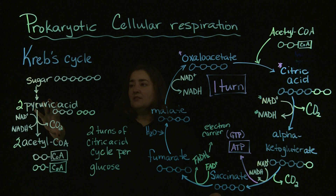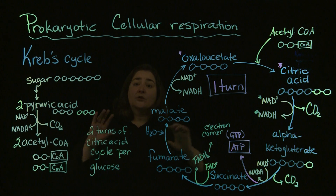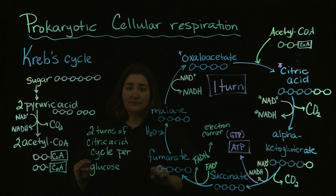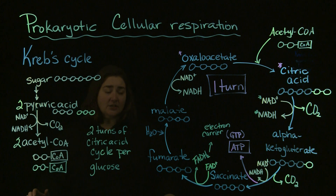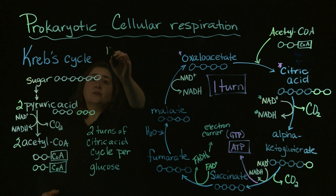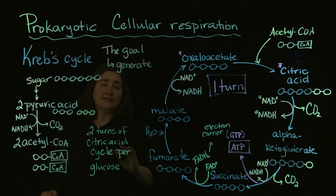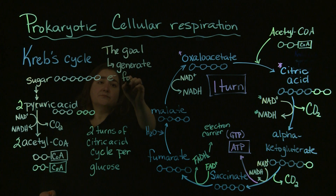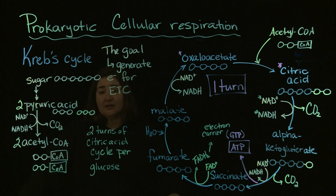Some textbooks will put this conversion of pyruvic acid to acetyl-CoA as a precursor to the Krebs cycle; some don't. As long as you're aware of where the carbon dioxide is generated and how much is generated per glucose molecule, that's what I'm concerned with. The goal of our Krebs cycle is not generating more ATP — although that's a nice side effect — we're generating electrons for our electron transport chain, which is going to be the topic of the next video.